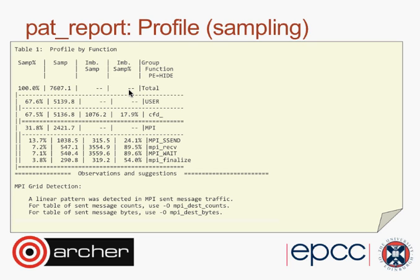If some processes are taking longer than others, that will be shown up as a load imbalance. An 18% load imbalance would mean that the task taking the longest time is 18% longer than the average. So if you could get perfect load balance — if you split your system exactly evenly — then you would expect your code to speed up by 18%.